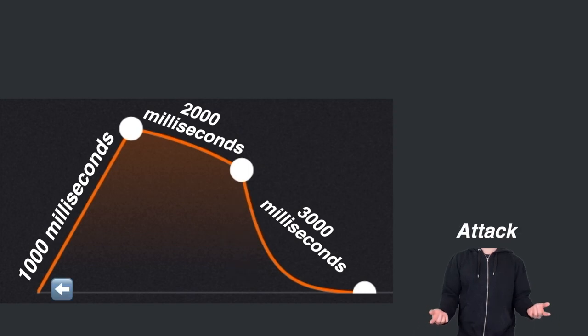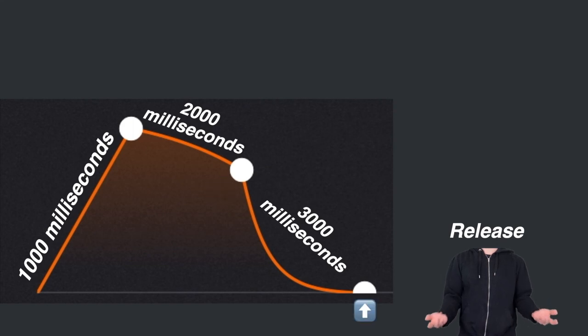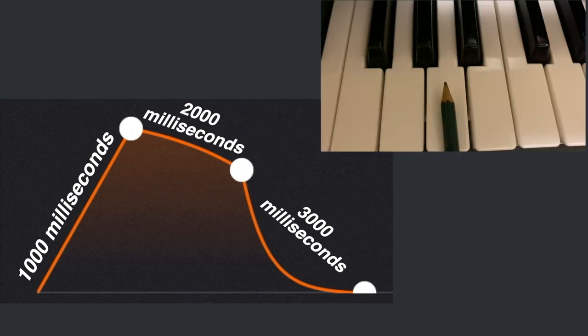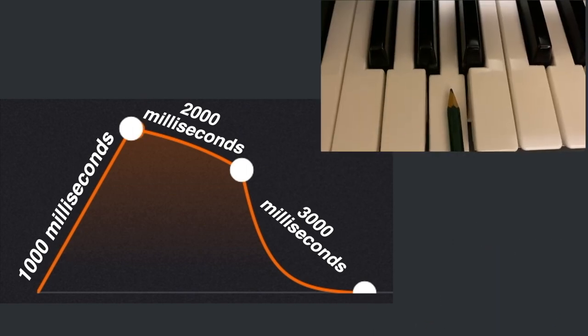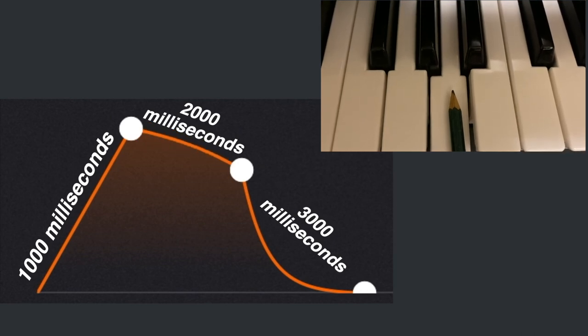So we should hear the synth go from zero to the loudest volume in one second. And after it reaches that peak, it will take two seconds to reach 75% loudness. And until we let go of the key, it will sustain at that loudness. And when you let go of the key, it will take three seconds to go from 75% to 0% in volume. Let's hear and see it. Press and hold, and we'll hold on for a bit more.